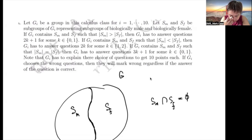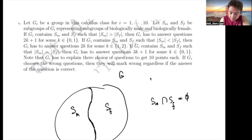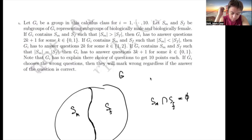So it's either S_M or S_F that a member belongs to. If G_I contains S_M and S_F such that the cardinality of S_M is greater than S_F, then G_I has to answer questions 2K+1 for some K from 0 to 1. And if the cardinality of S_M is less than S_F, then G_I has to answer questions 2K for some K from 1 to 2.